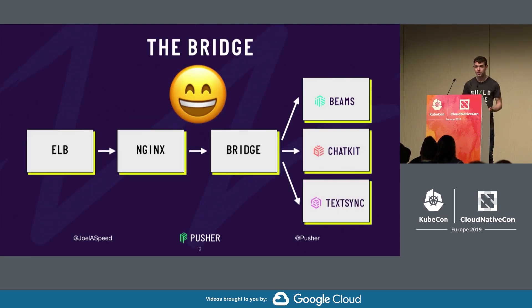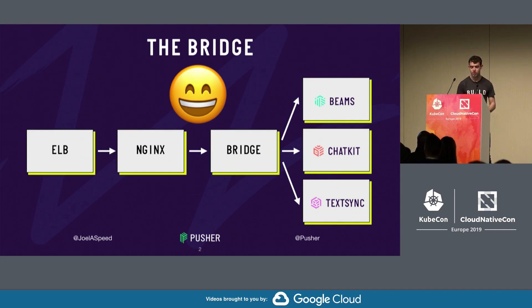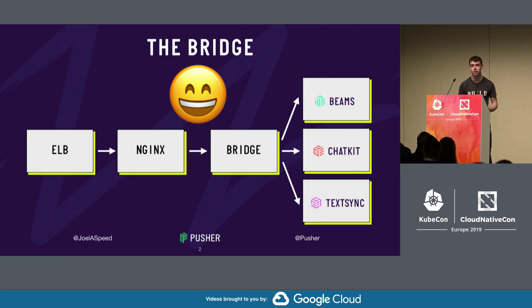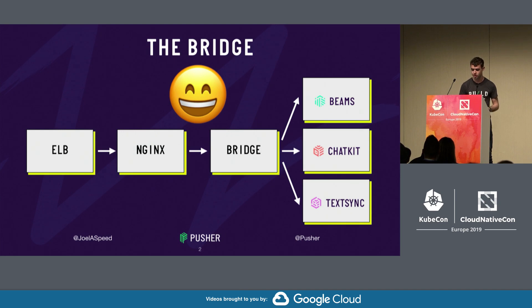Before I can go into what happened in these incidents, I need to tell you a little bit about our systems. When a customer tries to access one of our products, their traffic needs to go through an ELB, through NGINX, through something we call the bridge, and then it goes on to the product services themselves. The bridge is a layer 7 proxy that we built in-house a couple of years ago that does a whole bunch of Pusher-specific logic around authentication, H2, and WebSocket upgrades. When the bridge is working, the platform is considered healthy.